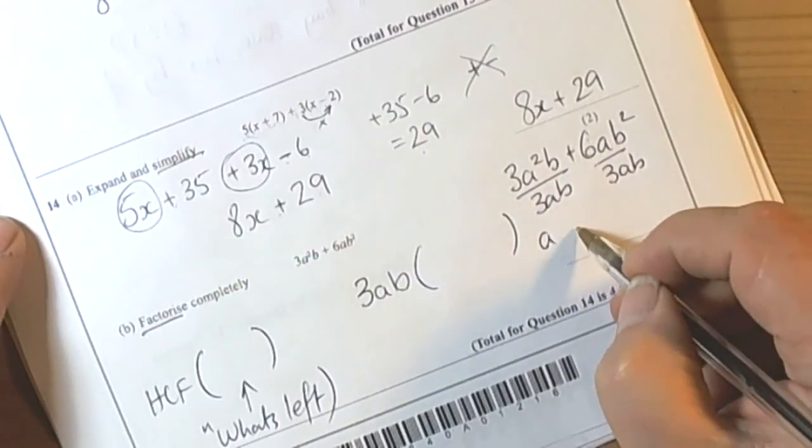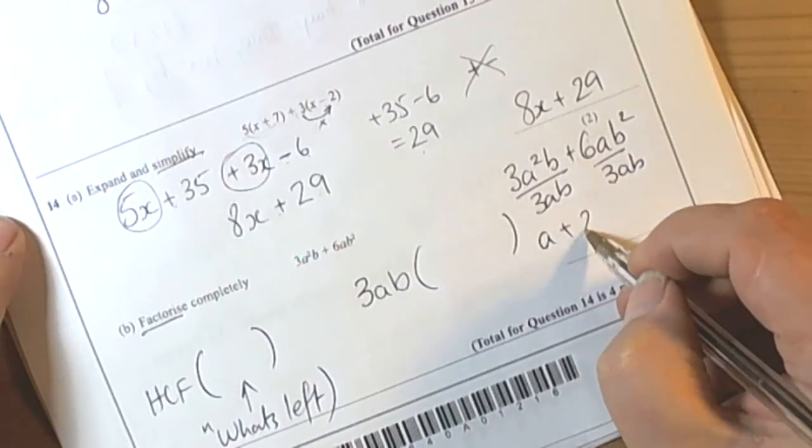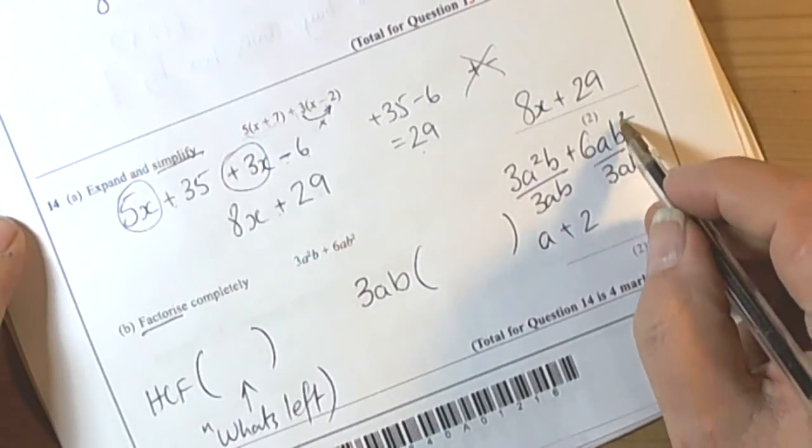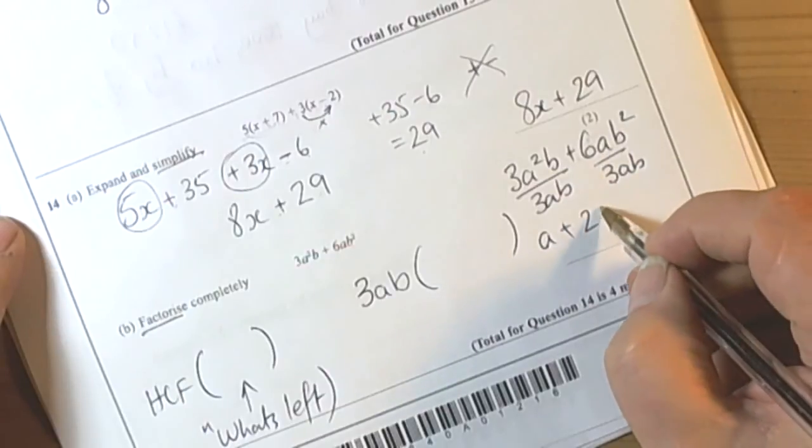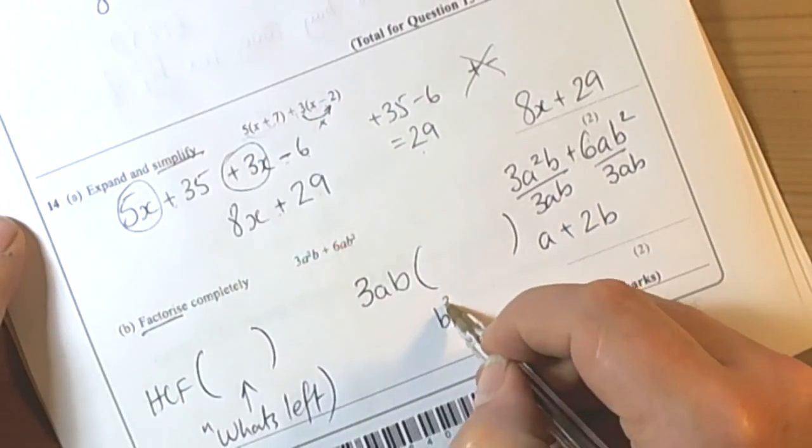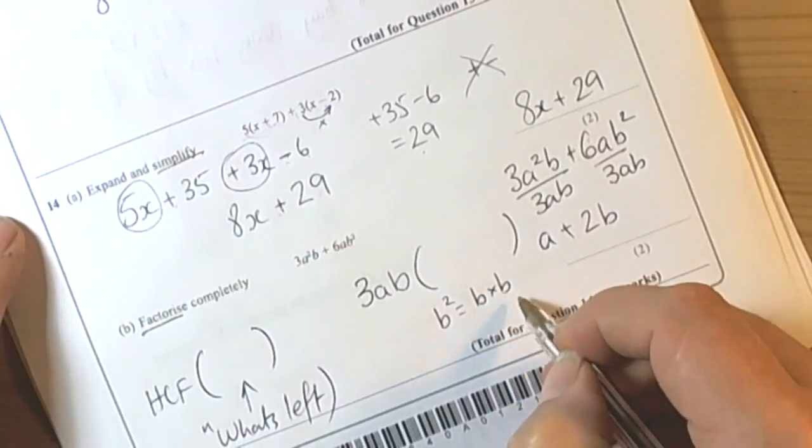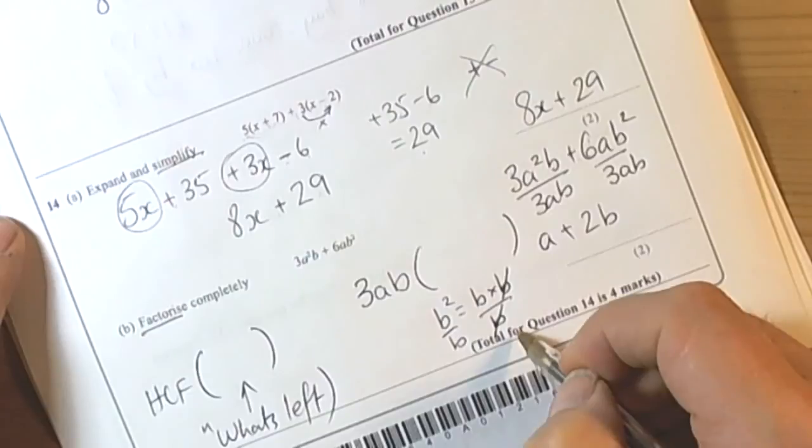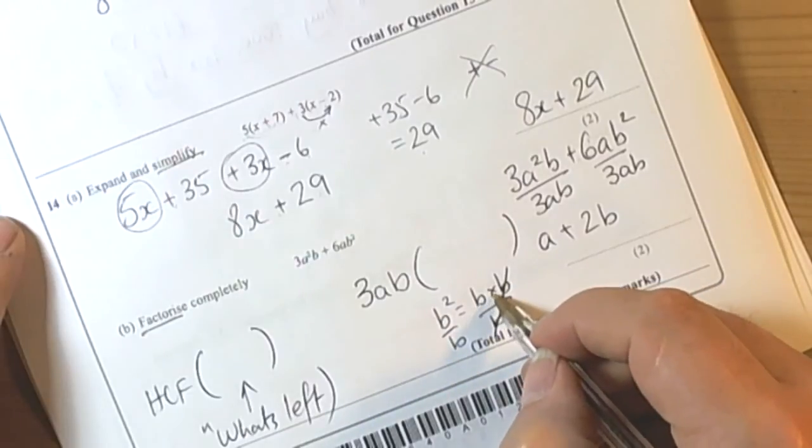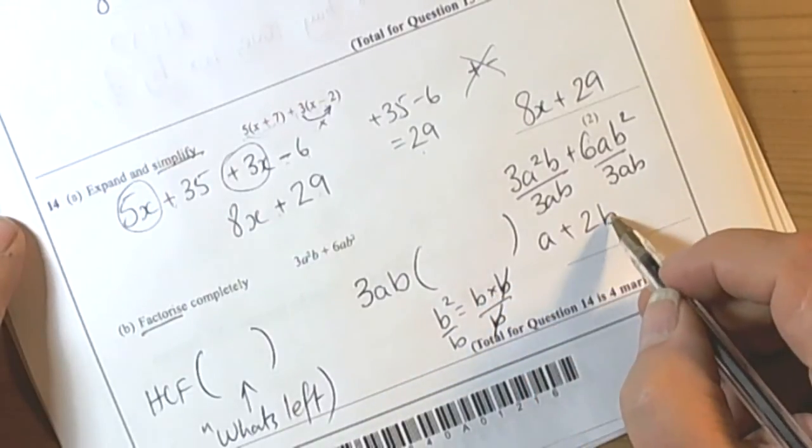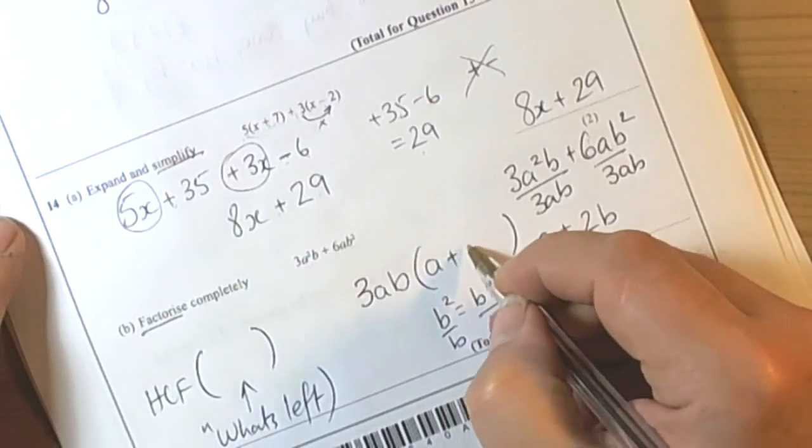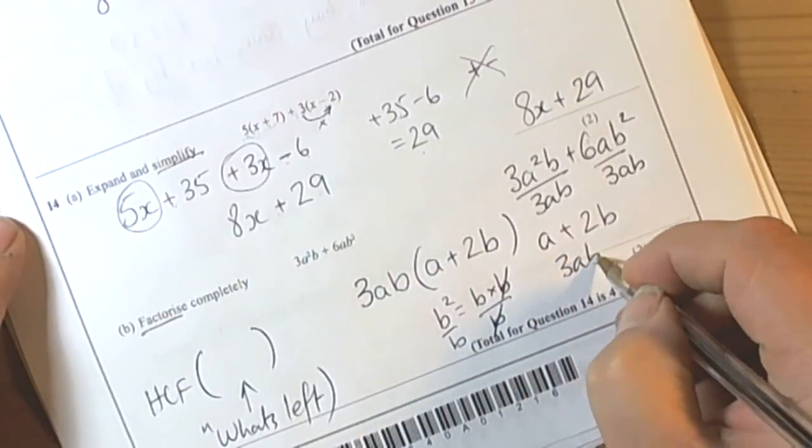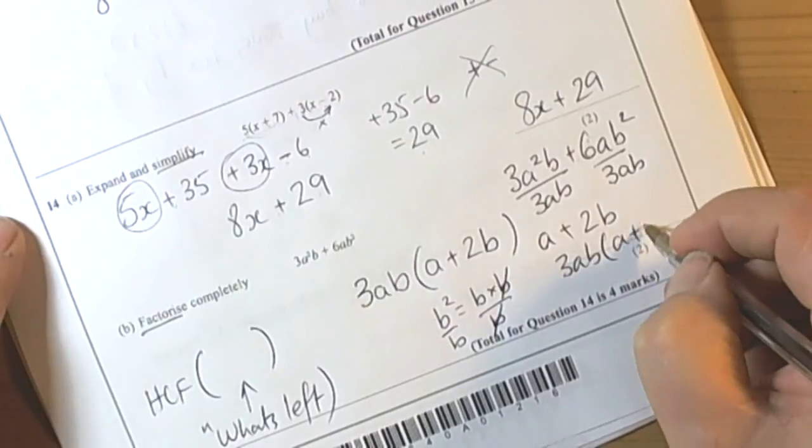6 divided by 3, we've got a plus sign of course, 6 divided by 3 is 2, a divided by a is 1 so that cancels, and we've got b² divided by b which would leave us with a b. If you're not sure why, then remember that b² means b times b. If I'm dividing by a b, then that b cancels with that b to become 1, and b times 1 is b. So we'd be putting a plus 2b. So our answer would be 3ab brackets a plus 2b.